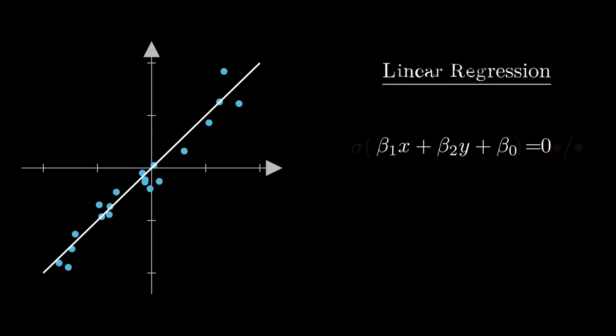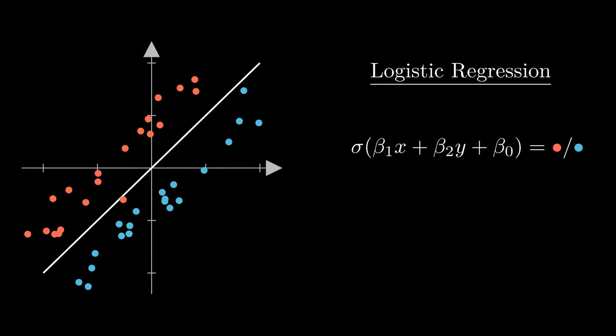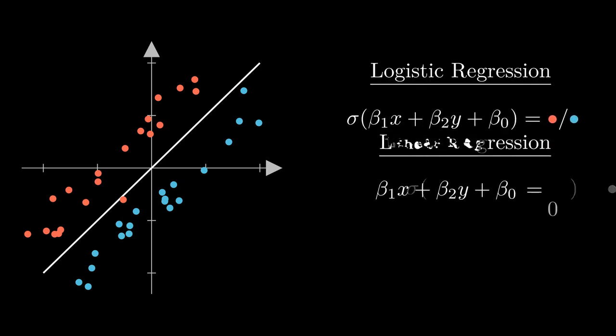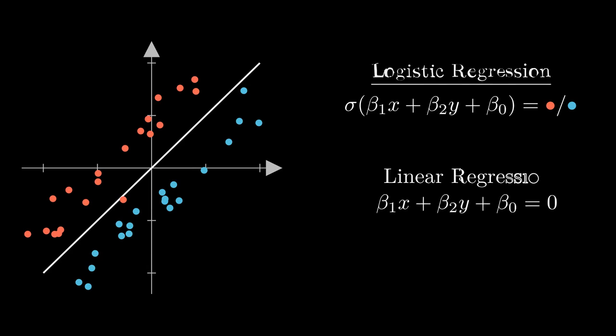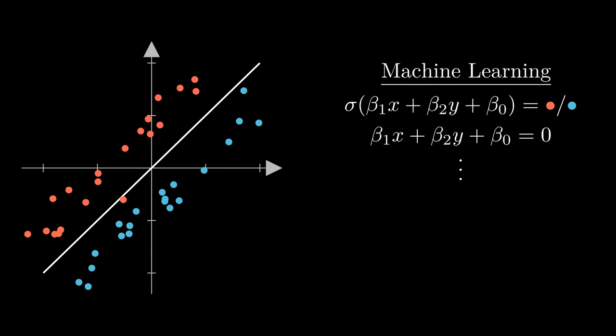Technically, it is called the logistic regression, because it matters which side of the line each data point winds up on. But logistic or linear, these sorts of models are probably the most used variety of artificial intelligence in existence today. And indeed, the term machine learning really just describes the use of statistics in AI at all.